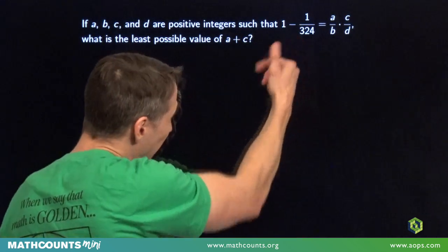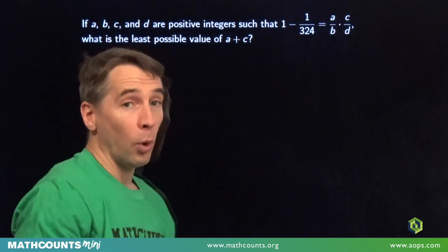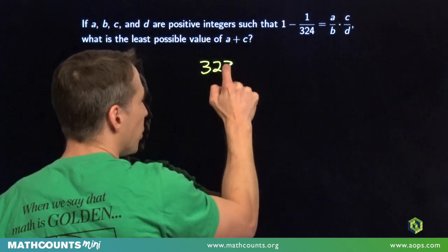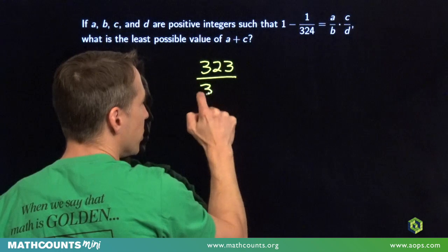Now we'll start off simplifying the left hand side. Subtract 1/324 from 1, and we're left with 323/324.